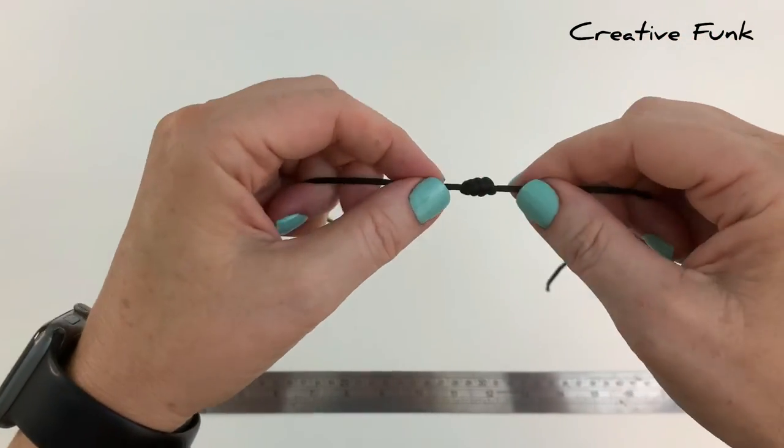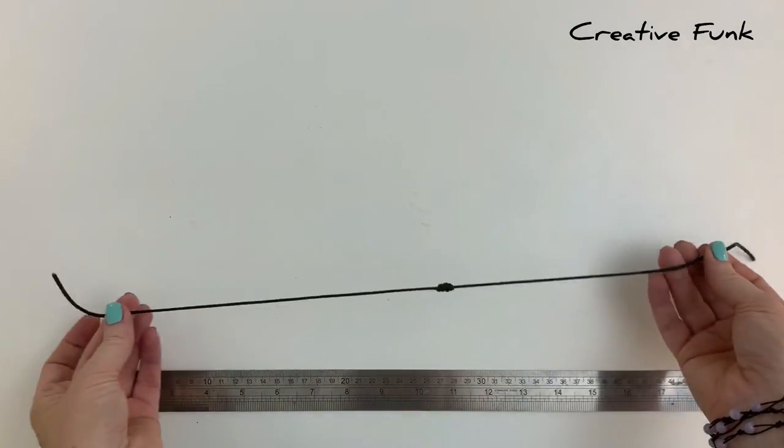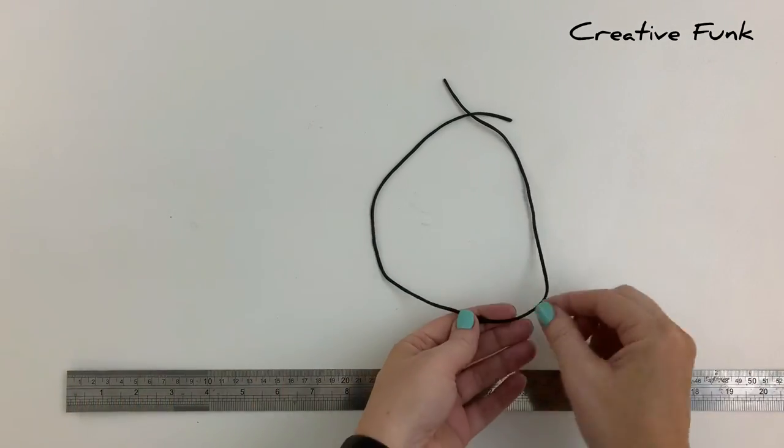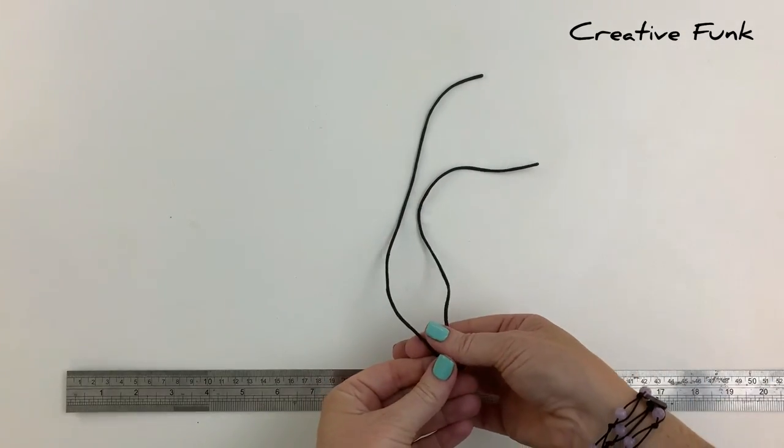We want this barrel knot to be in the center of our cord so that we can have a nice even sliding knot bracelet. I'm just checking my cords are nice and even by holding on to this barrel knot.